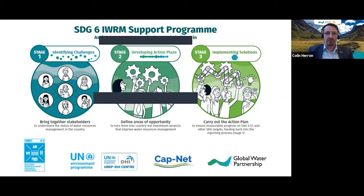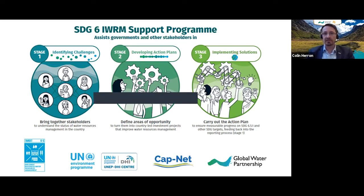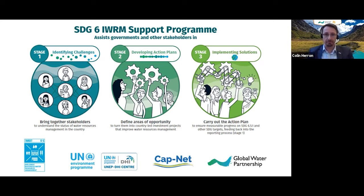Once those challenges have been defined, we help countries with a methodology we have developed to turn that into an IWRM Action Plan in stage two. We also help countries to implement those solutions — we don't want an action plan just to be developed; we want it to be implemented in such a way that it feeds back into the monitoring exercise. Stage three then supports the stage one monitoring every three years, allowing us to see progress at the national level in the key areas identified.